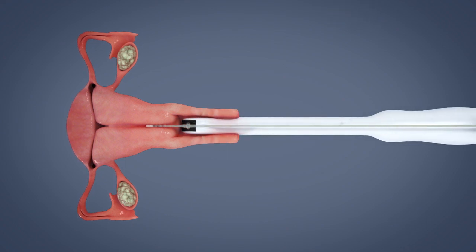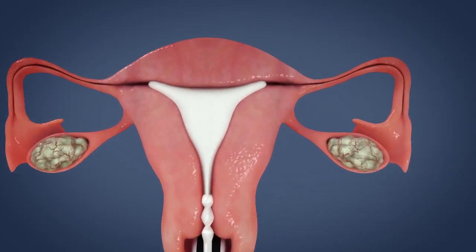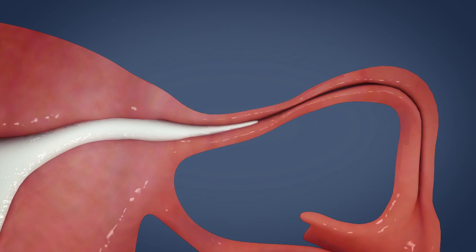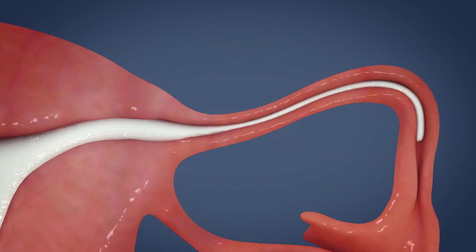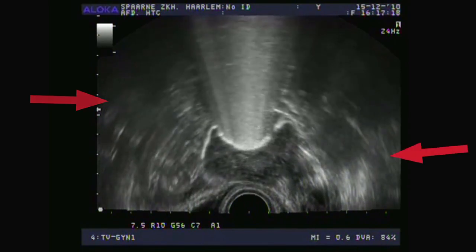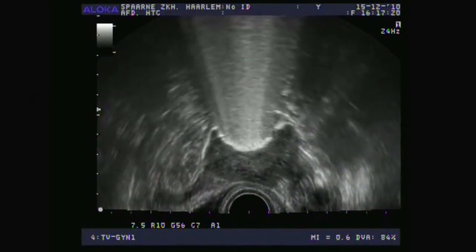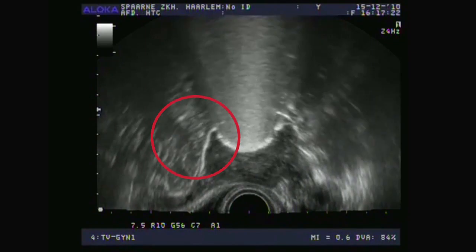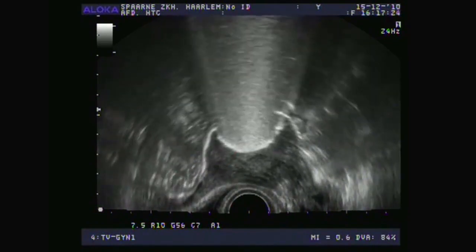The gel foam opens the tube from its natural collapse state and flows unless there is an obstruction. The ability to infuse the foam is an indicator of patency. Patency can then be confirmed using ultrasound imaging to detect the presence of the foam running the length of the tube.